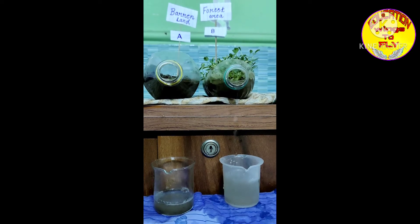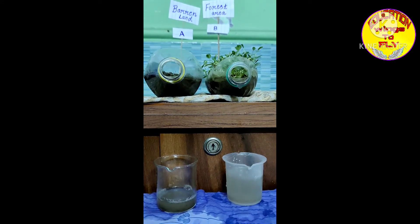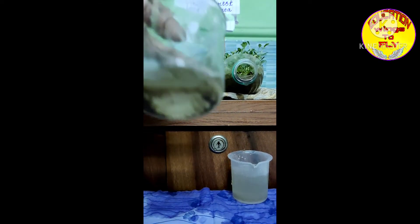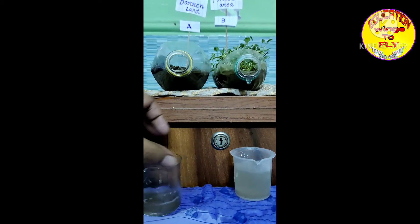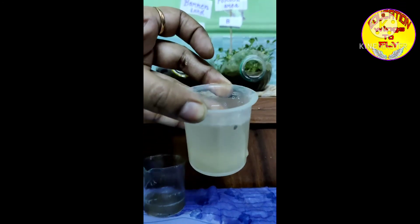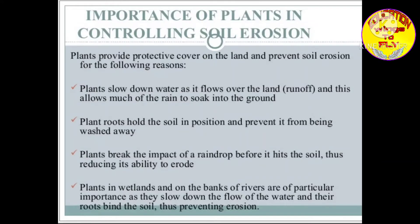Closely look at the beakers — the amount of water collected from both cases A and B. From case A, the barren land, you can see lots of soil has been washed out because there were no plants. Whereas in case B, the forest area, very little soil is washed away because so many plants were grown.